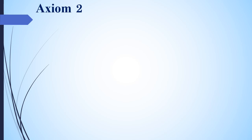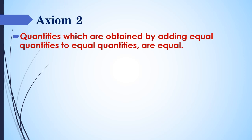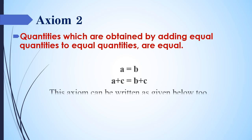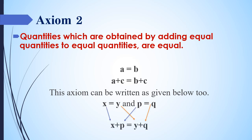Axiom number 2: Quantities which are obtained by adding equal quantities to equal quantities are equal. According to the example, both A and B quantities are equal, so the answers will be the same when adding C to both A and B. We can write this as: if X equals Y and P equals Q, then X plus P is equal to Y plus Q.